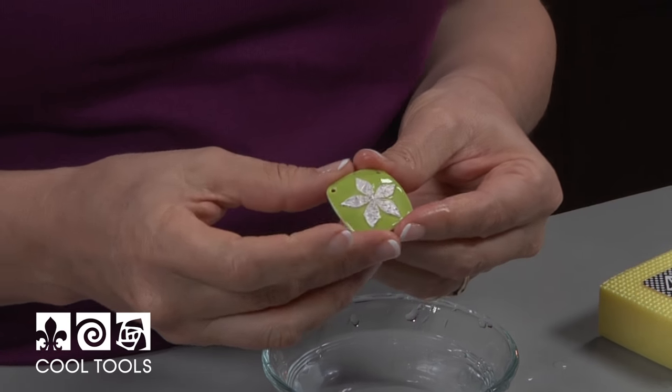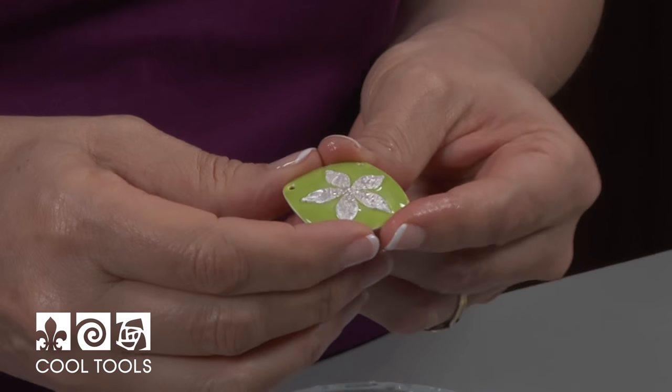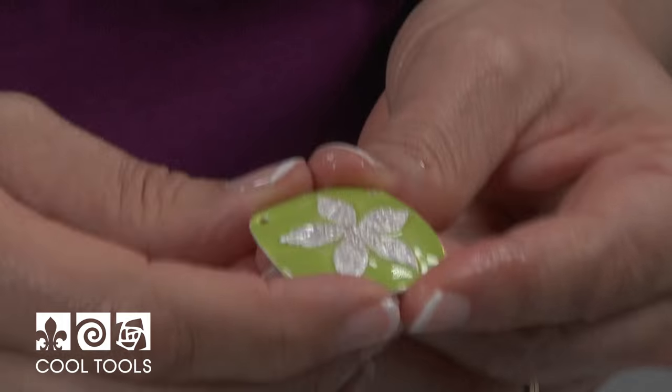And now the secret step. And that is, you can tumble enamels. It won't hurt the enamel. So I'm going to put this in a tumbler for about half an hour. And that's going to bring up the design again. It's going to make it a little shinier. So I'm going to go tumble it. And when I come back, I'm going to assemble it with a chain.